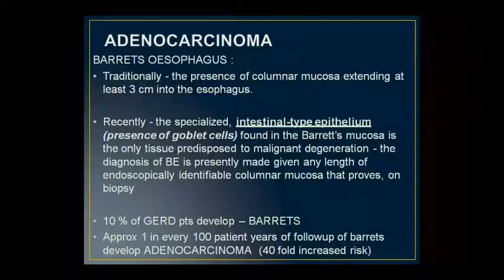Barrett's esophagus is currently defined by specialized intestinal-type epithelium with goblet cells, which is the only tissue predisposed to malignant degeneration. Endoscopically, any identifiable columnar mucosa proven on biopsy qualifies. Approximately 10% of GERD patients develop Barrett's esophagus, and every such patient carries an increased risk of adenocarcinoma.